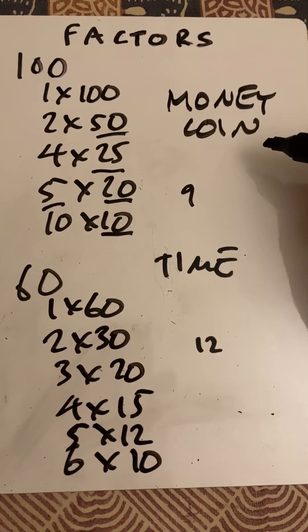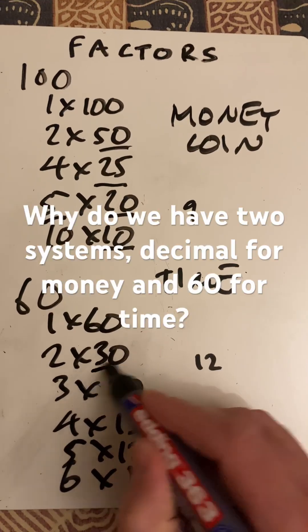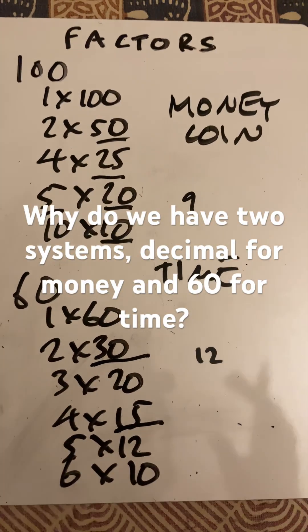More so than we have in the decimal situation. So why do we have two of these? Here we can see how many minutes for half an hour, quarter of an hour. Why? We have to look at...